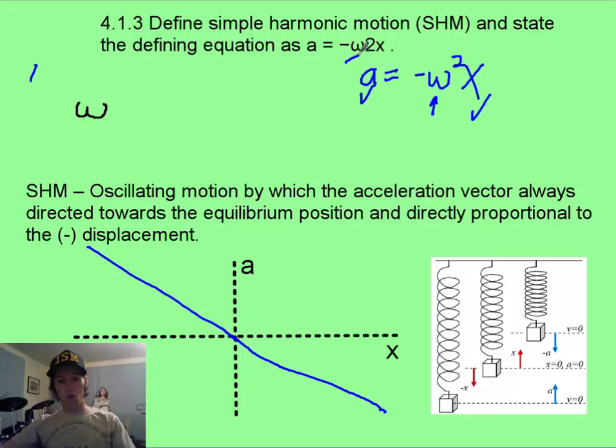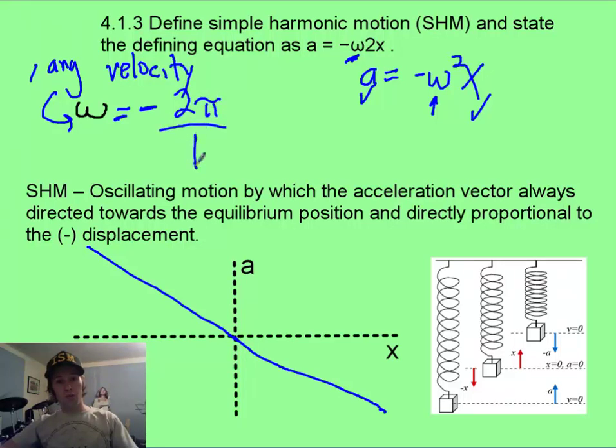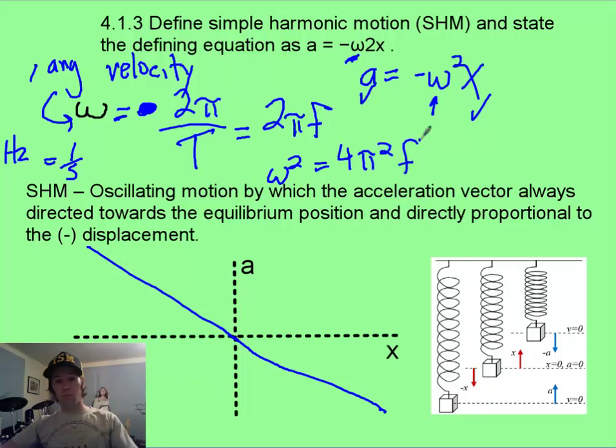Now you might be wondering, what is that crazy omega situation? Well, that omega situation is going to be the angular velocity, is the name of the term. And that's going to be 2 pi over the period. So that's going to be in the units of 1 over seconds, which is also the units of hertz, or frequency. And so another way of writing this is 2 pi f. Now if you have omega squared, clearly you'll end up with something like 4 pi squared frequency squared.